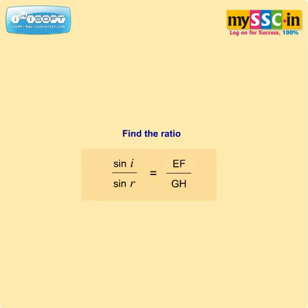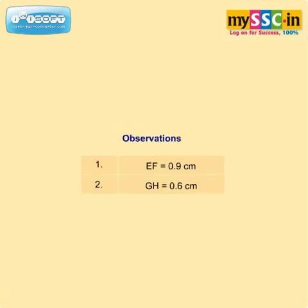Find the ratio sin i / sin r, which is equal to EF / GH. This gives the refractive index of glass with respect to air. Here, EF is equal to 0.9 cm and GH is equal to 0.6 cm.